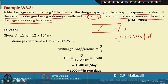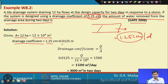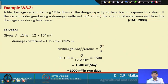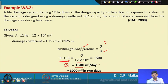The drainage coefficient is 1.25 centimeters per day. The area is 12 hectares, which is 12 × 10⁴ square meters. The drainage coefficient equals Q divided by area, so putting in 0.0125 for the coefficient and the area, Q equals 1500 cubic meters per day. For 2 days, the total water removed is 3000 cubic meters.